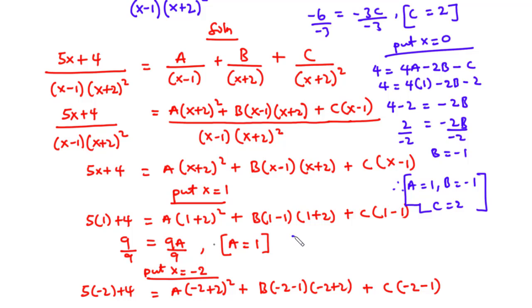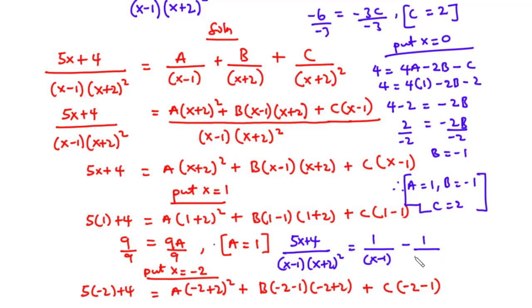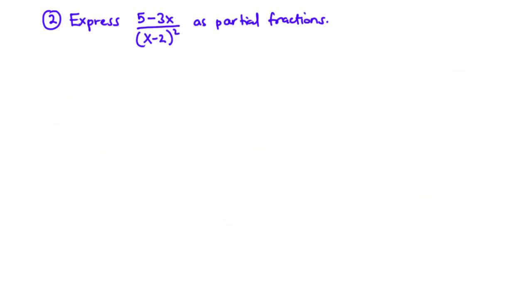Therefore, the rational function 5x plus 4 divided by x minus 1 times x plus 2 all squared can be expressed in partial fractions as 1 over x minus 1 minus 1 over x plus 2 plus 2 over x plus 2 all squared. Now in the second question, we are going to express 5 minus 3x over x minus 2 all squared as partial fractions.